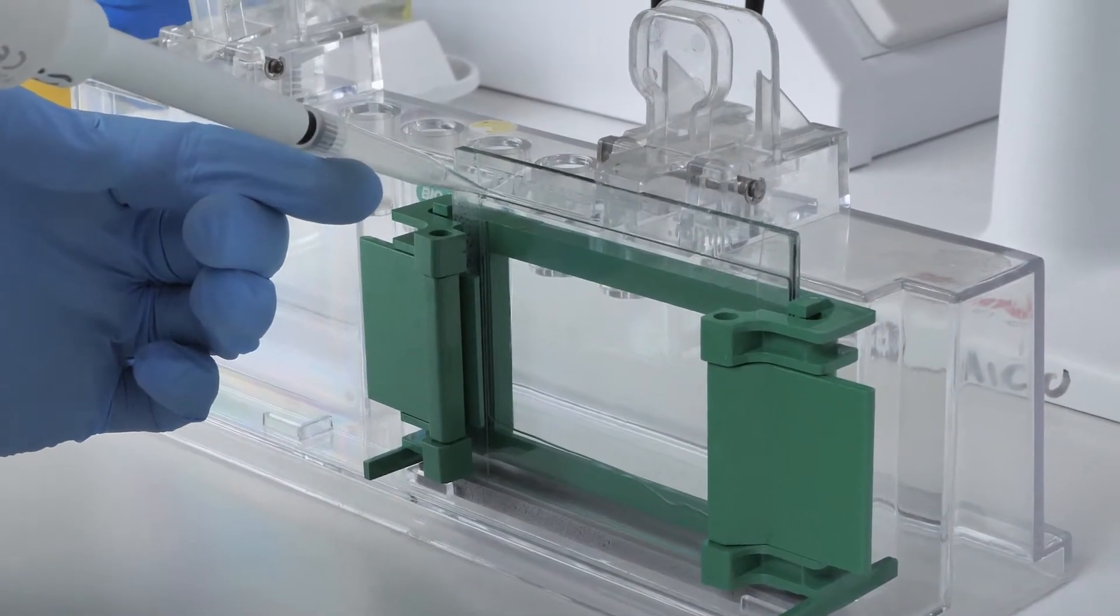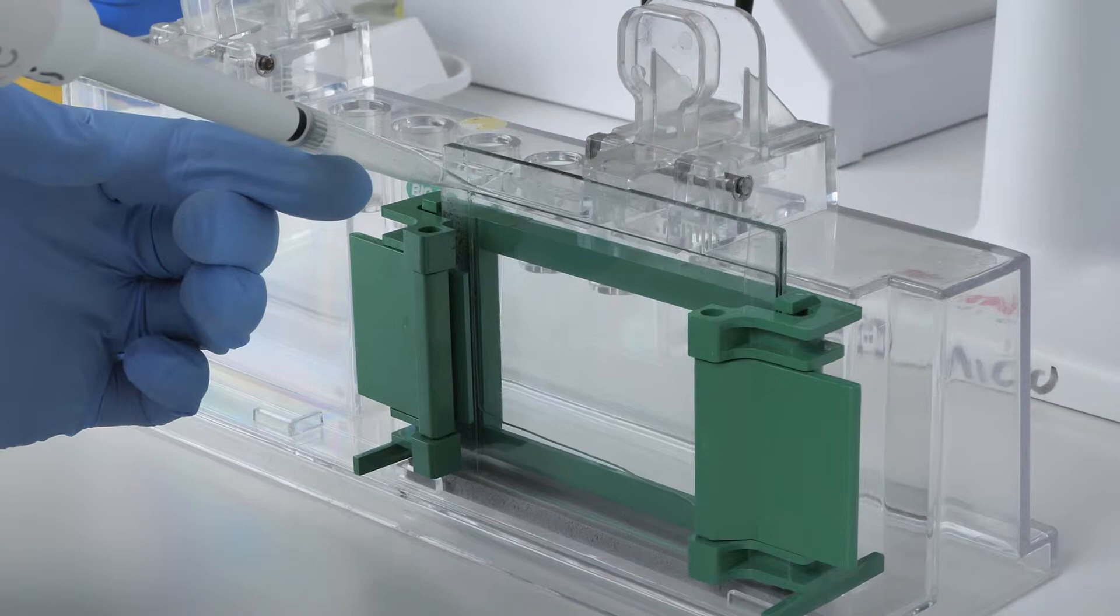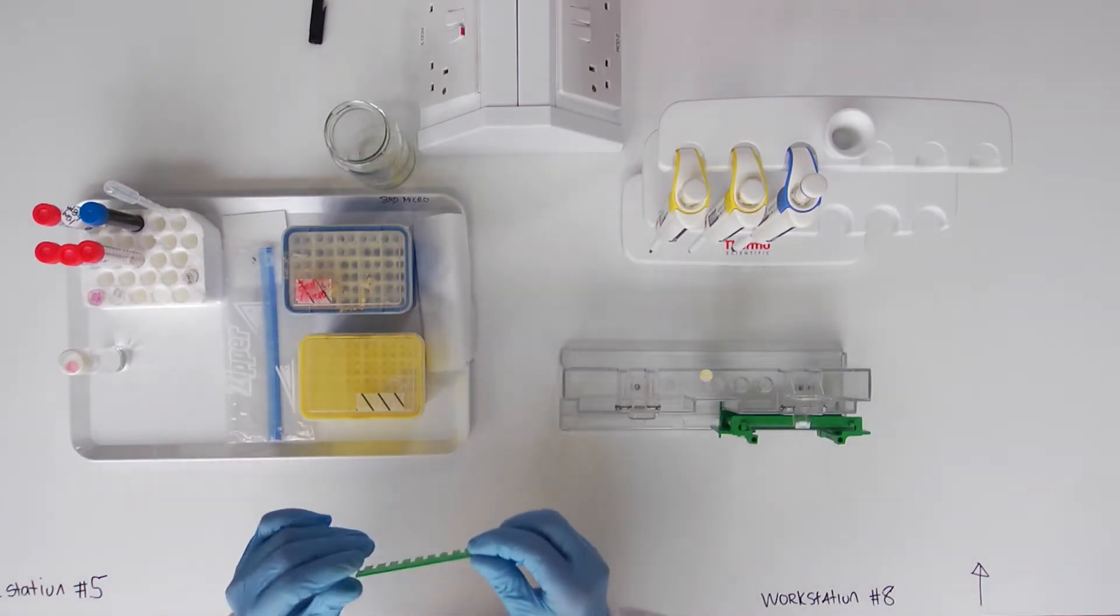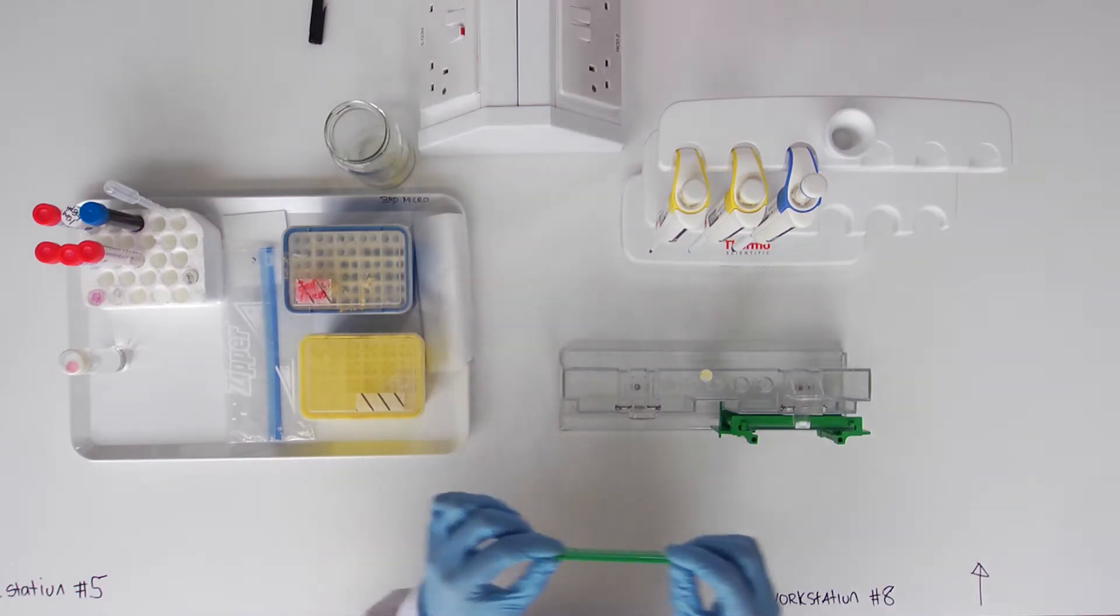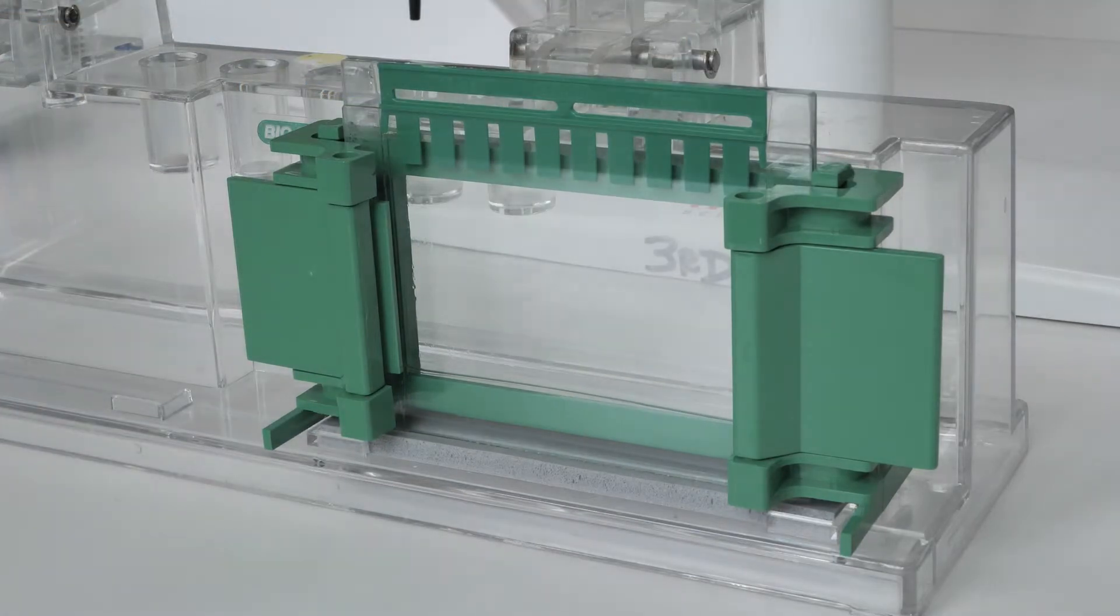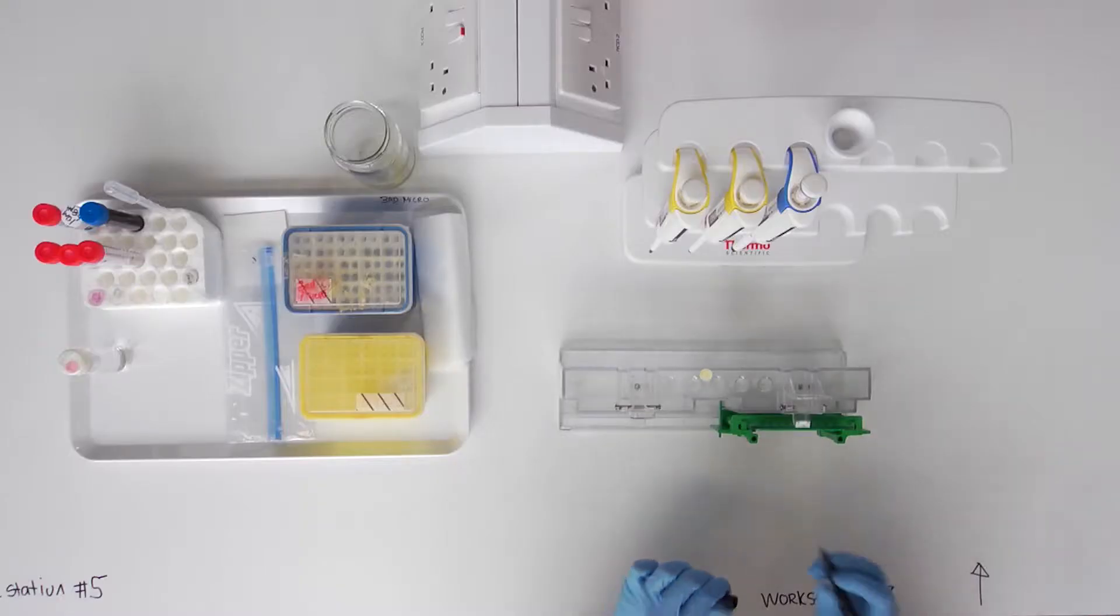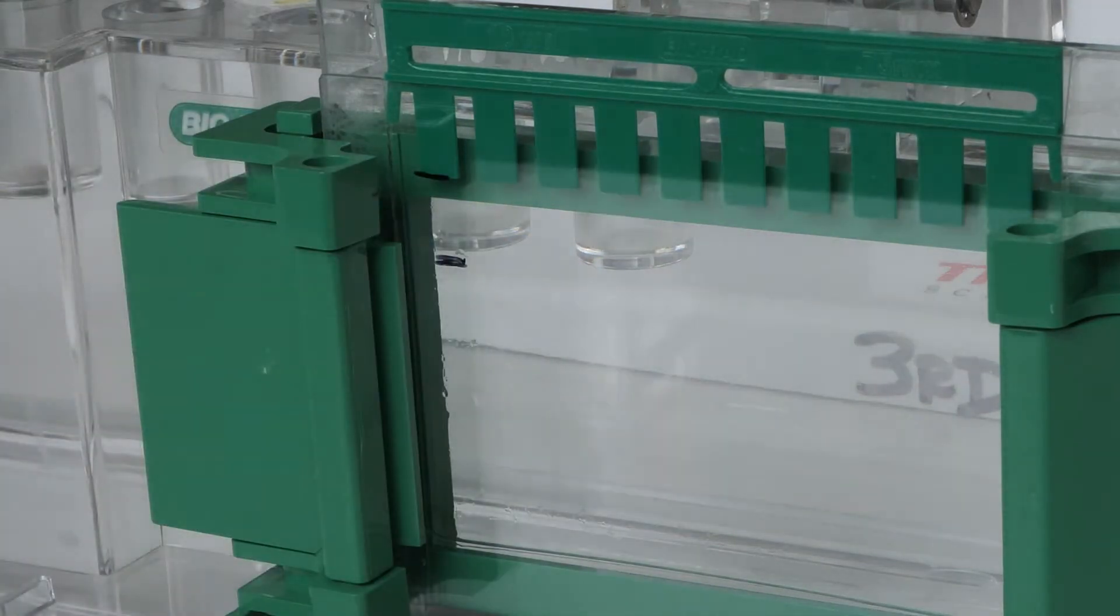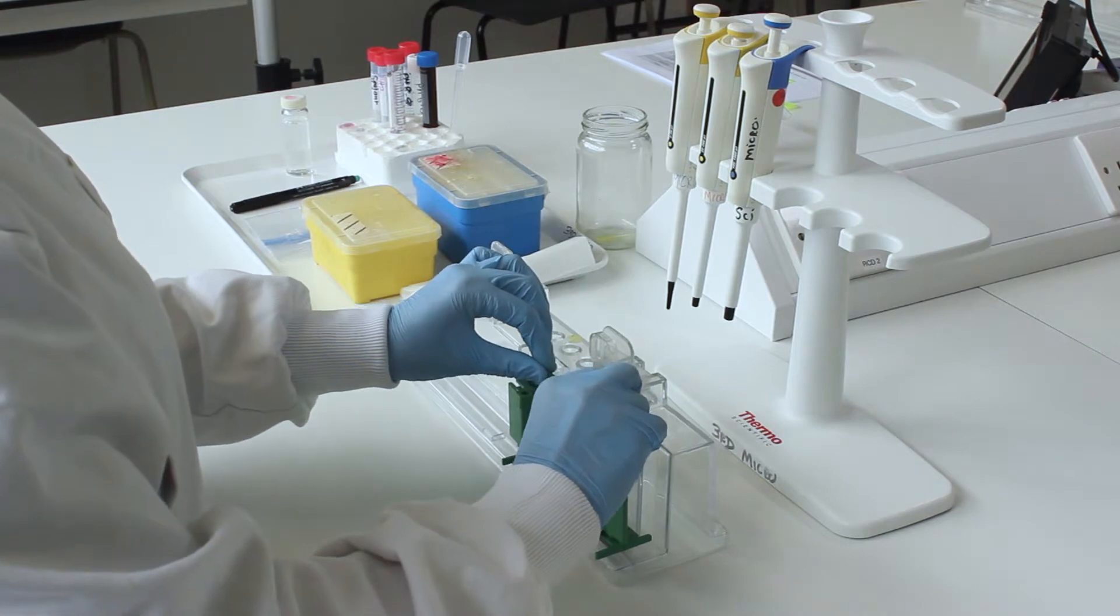After the sealant gel polymerizes, which typically takes between 10 and 20 minutes, insert the comb between the glass plates and make a mark on the front plate approximately 1 cm below the bottom of the teeth. Remove the comb again.